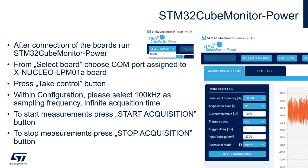It can take some time. Then within the configuration, please select 100kHz as the sampling frequency, then infinite acquisition time — and we are ready to start measurements. To start measurements, please press the Start Acquisition button. To stop measurements, please press the Stop Acquisition button. In between, you can see on the screen the data collected from the board via the XNucleo shield — the current consumption measurement over time.